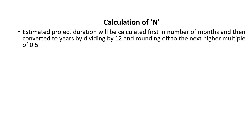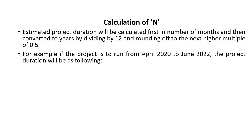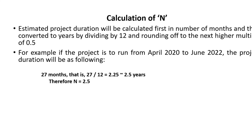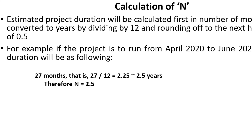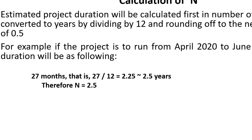This is the calculation of N. The estimated project duration will be calculated first in number of months and then converted to years by dividing by 12. For example, if the project is to run from April 2020 to June 2022, the project duration will be 27 months, that is 27 divided by 12, which equals 2.25. Round off this value to the next higher multiple of 0.5. Therefore, N equals 2.5.